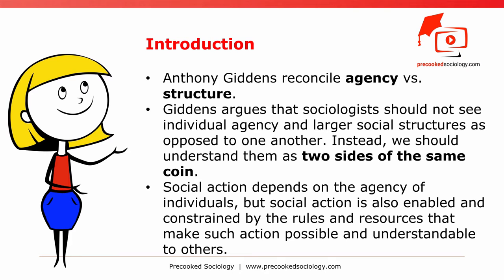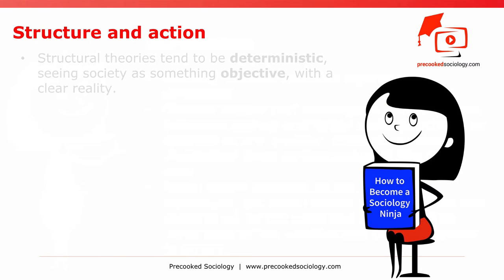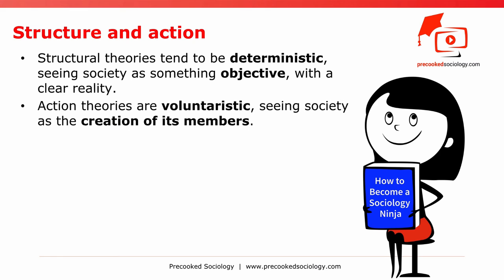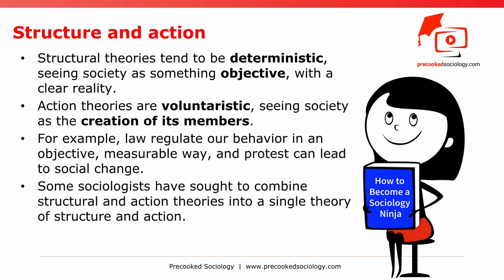Structure and action. Structural theories tend to be deterministic, seeing society as something objective with a clear reality. On the other hand, action theories are voluntaristic, seeing society as the creation of its members. Both theories have some truth — for example, law regulates our behavior in an objective, measurable way, and protests can lead to social change. Given this, some sociologists have sought to combine structural and action theories into a single theory of structure and action.